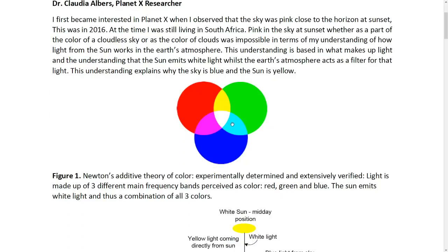This diagram here represents Newton's additive theory of light, and he experimentally determined this theory, and it's been extensively verified over hundreds of years now. Light is made up of three different main frequency bands which we perceive as color: red, green, and blue. Blue is the most energetic, or the higher frequency light. And the sun emits all three, so it emits white light, which is a combination of all three colors.